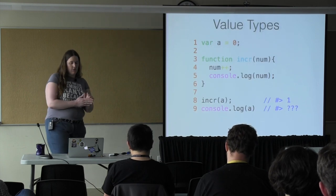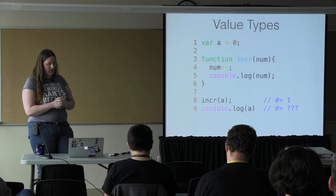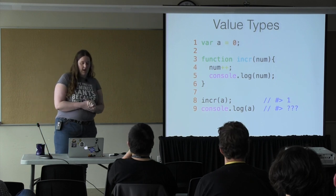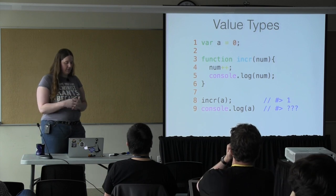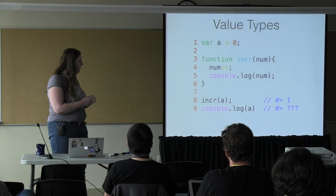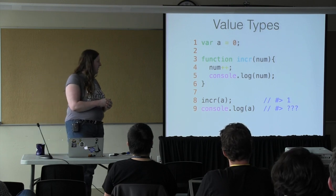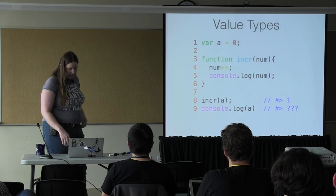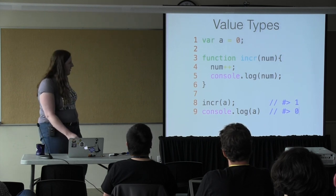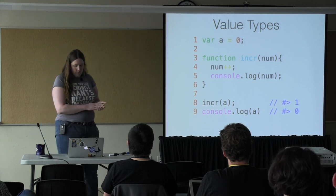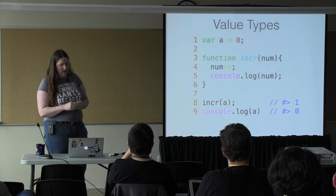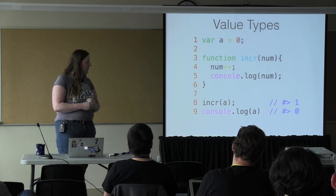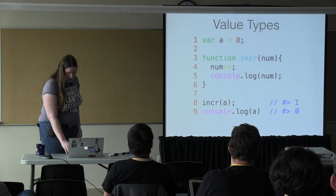In JavaScript, there are two different types: value types and reference types. Value types are things like integers, strings, and floating points. When you pass them into a function and modify them, you can modify what the value actually is. However, unless you actually assign it back, it doesn't change the number that was passed in. It's effectively a copy. In this function, we're incrementing the number that gets output to the console as one, then output the original value because the value does not persist into the function.